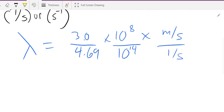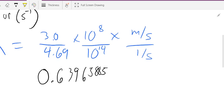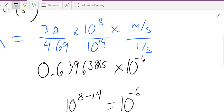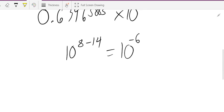So, 3.0 divided by 4.69 gives me 0.63965885, okay? Times 10 to the 8th over 10 to the 14th is the same thing as 10 to the 8 minus 14, which is going to equal 10 to the negative 6th, right? So, times 10 to the negative 6th, times meters per second divided by 1 over seconds.